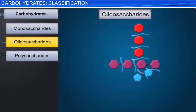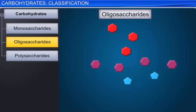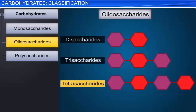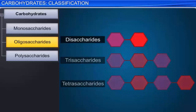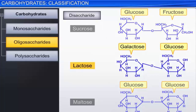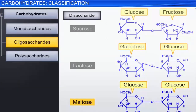Oligosaccharides yield 2 to 10 monosaccharide units when hydrolyzed. On the basis of the number of monosaccharide units produced on hydrolysis, this group can be further classified into disaccharides, trisaccharides, tetrasaccharides, and so on. A molecule of a disaccharide yields 2 molecules of monosaccharides on hydrolysis — a disaccharide is made up of 2 monosaccharide units, which may be the same or different. Sucrose, lactose, and maltose are examples of disaccharides.